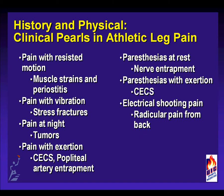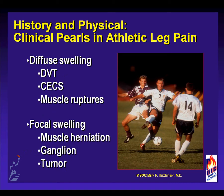Paresthesias with exertion should raise concern for chronic exertional compartment syndrome. Electrical shooting pain primarily from the upper extremity or back is consistent with a disc or more proximal radiculopathy. Diffuse swelling may be indicative of a deep venous thrombus, and could be associated with chronic exertional compartment syndrome or muscle ruptures. Muscle ruptures should have a palpable defect somewhere along the muscle tendon unit. More localized focal swelling may be indicative of a ganglion, a tumor, or more commonly in athletes, a muscle herniation, which can be directly associated with chronic exertional compartment syndrome.